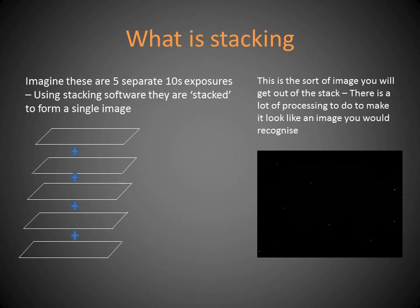Stacking is really the crux of deep sky imaging. As you can see here, I've given a brief example of five different images. What the software does is basically put them one on top of the other, and on the right-hand side you can see the sort of image you get out of the stack — it's black, you can see a couple of bright stars, there's nothing to it. That's where the processing comes in. This guide is not going to cover processing; that will be looked at further on in one of the guides with the online astronomy society.